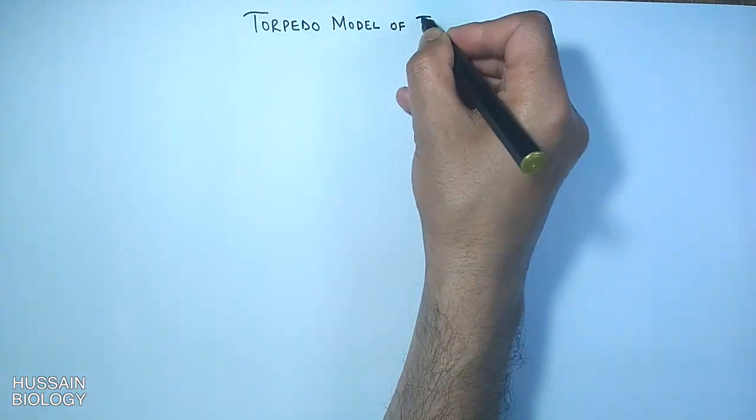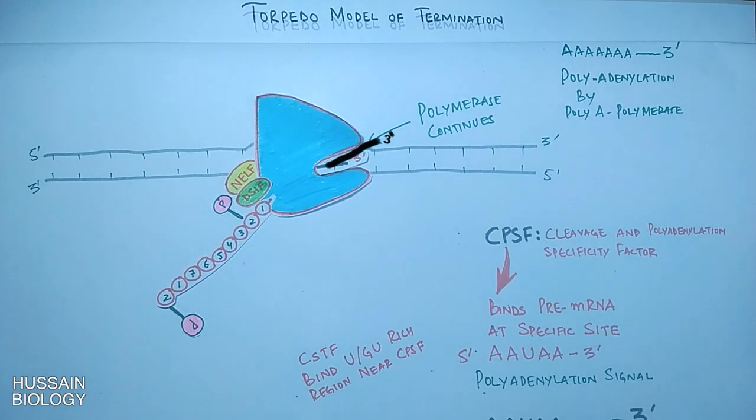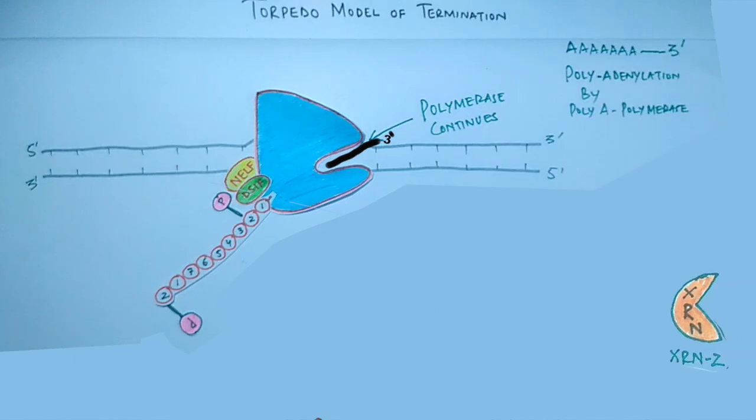For this we have torpedo model of termination in eukaryotes, which is done by XRN2 or Rat1 proteins—XRN2 in case of humans and Rat1 in case of yeast.